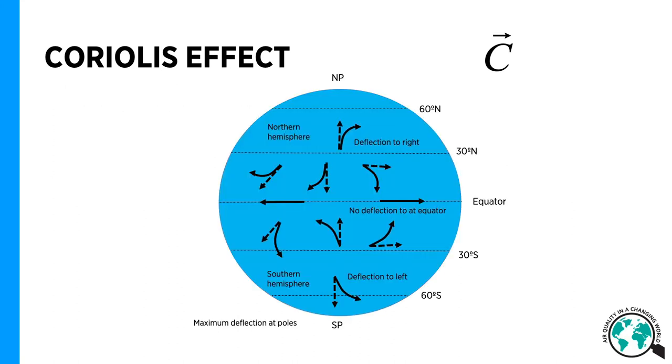In the northern hemisphere, all the winds tend to turn right and in the southern hemisphere to the left. At the equator, there is no Coriolis effect.